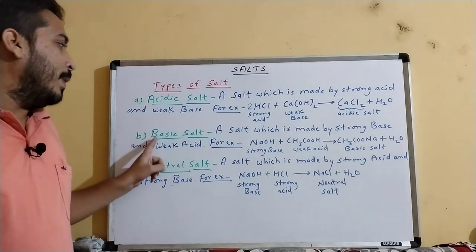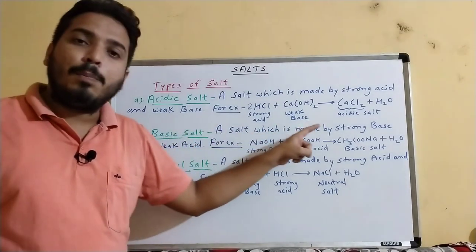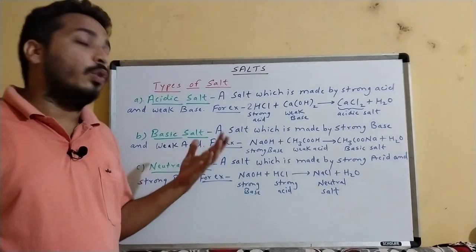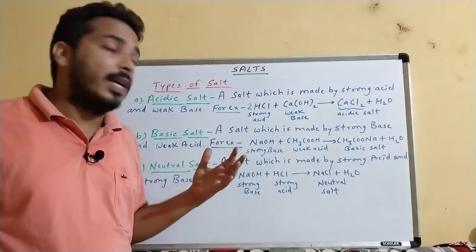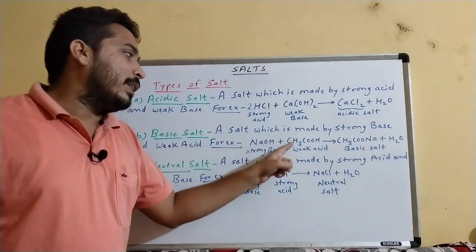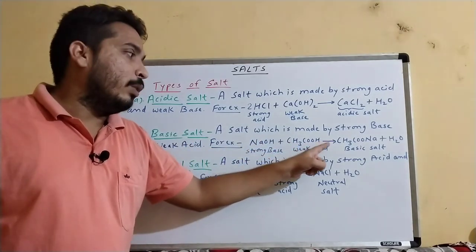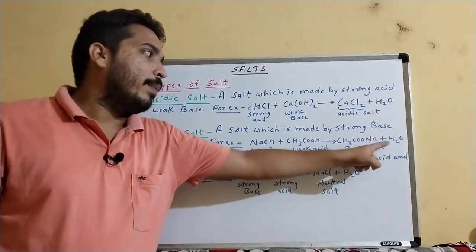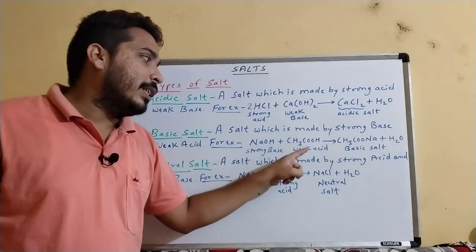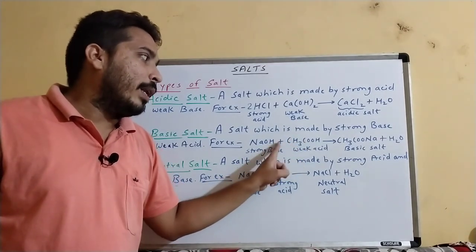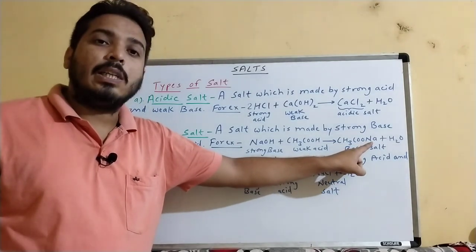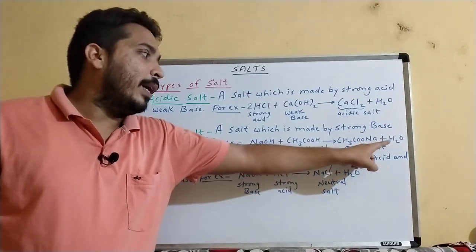Next is basic salt — a salt which is made by a strong base and a weak acid. For example, NaOH plus CH3COOH gives CH3COONa plus H2O. Here, NaOH (sodium hydroxide) is the strong base.